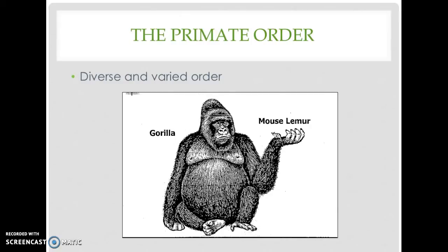It was around 60 million years ago that a distinct group of mammals appeared: the primates. So what exactly is a primate, and what sets primates apart from other mammals? The primate order is made up of close to 300 different species, so there's a lot of variation.